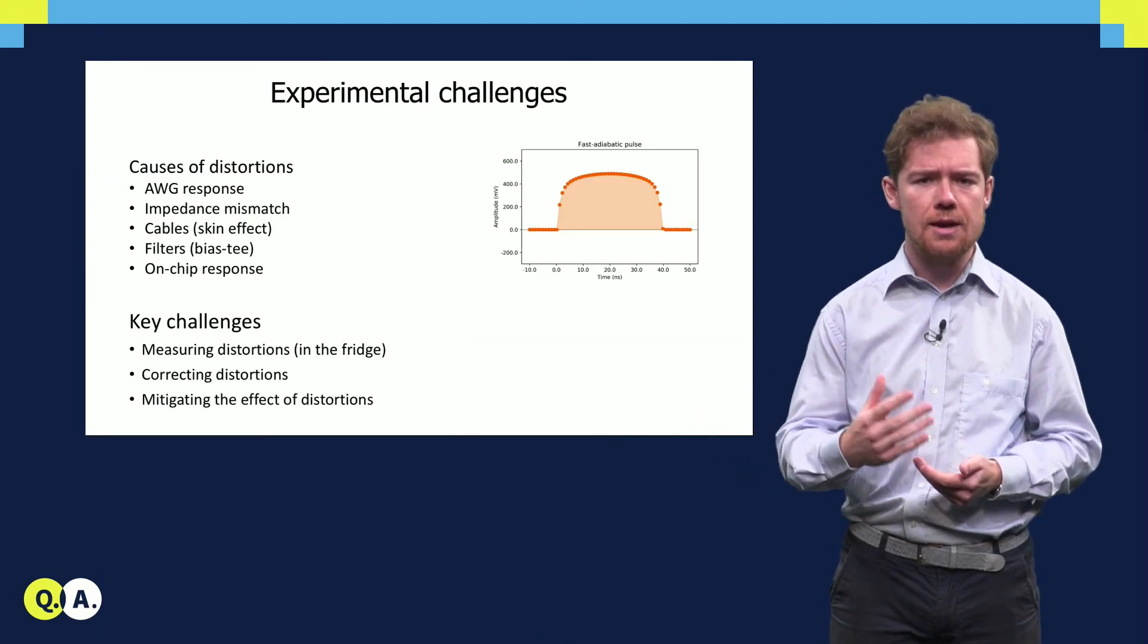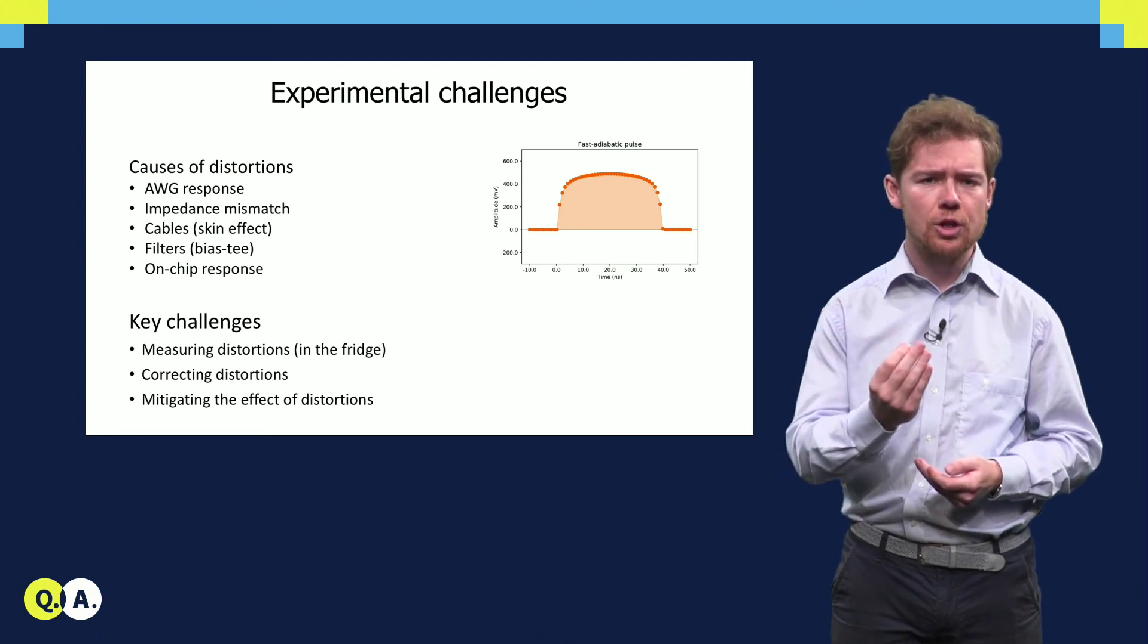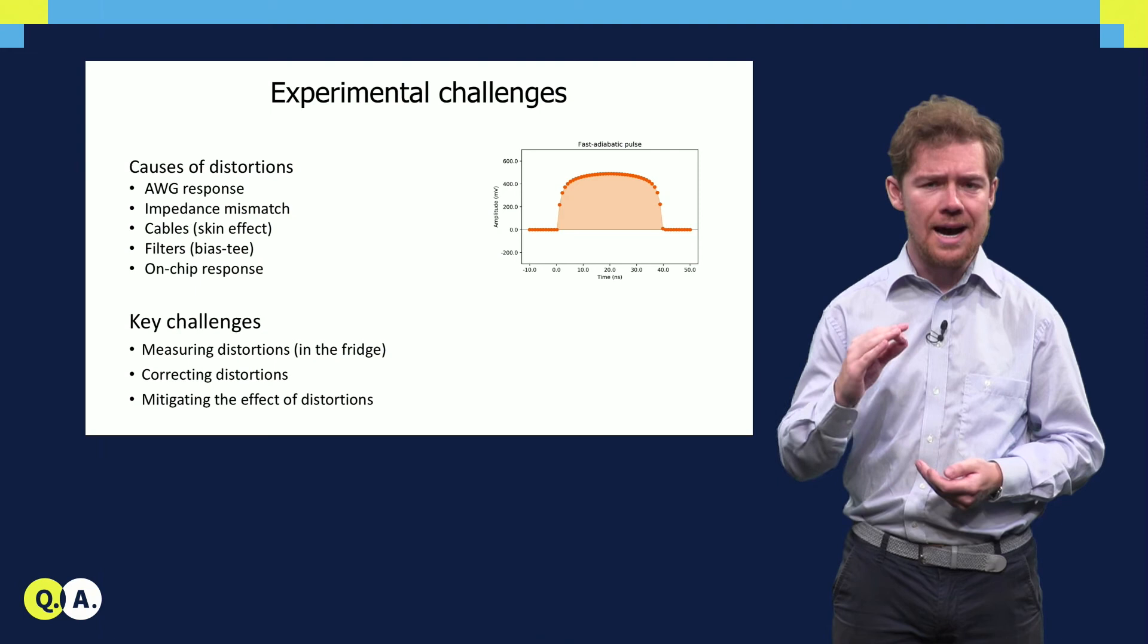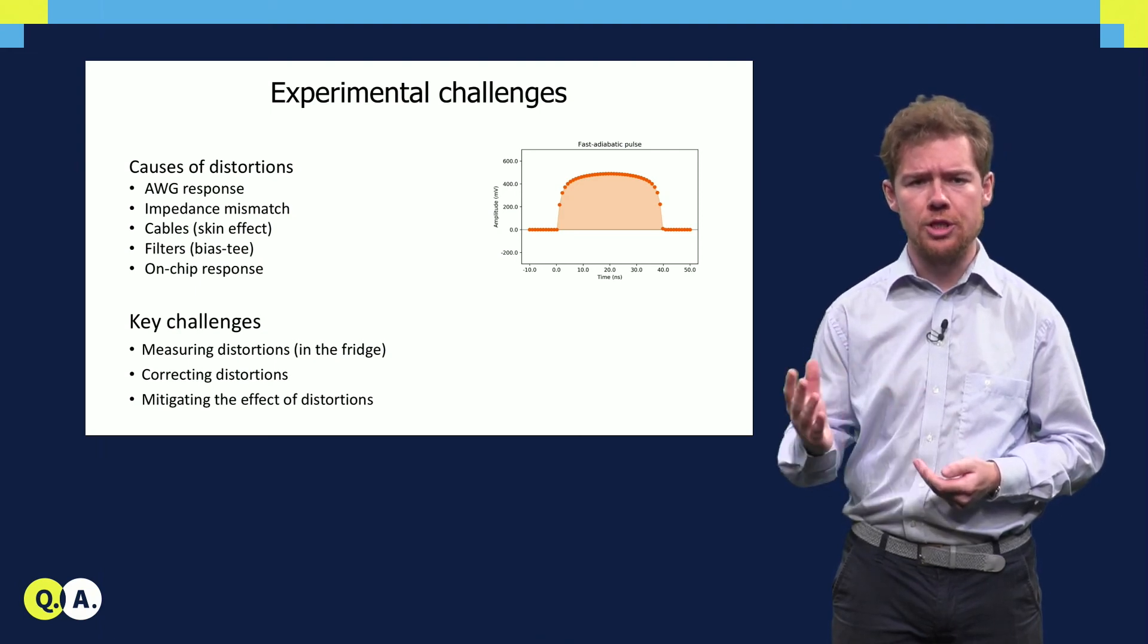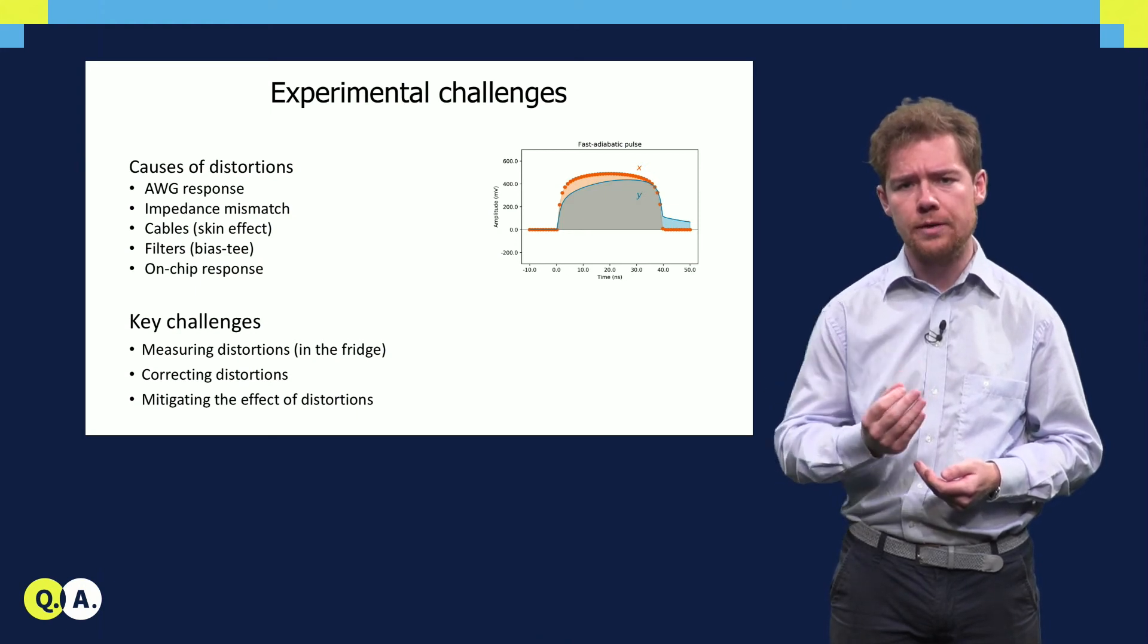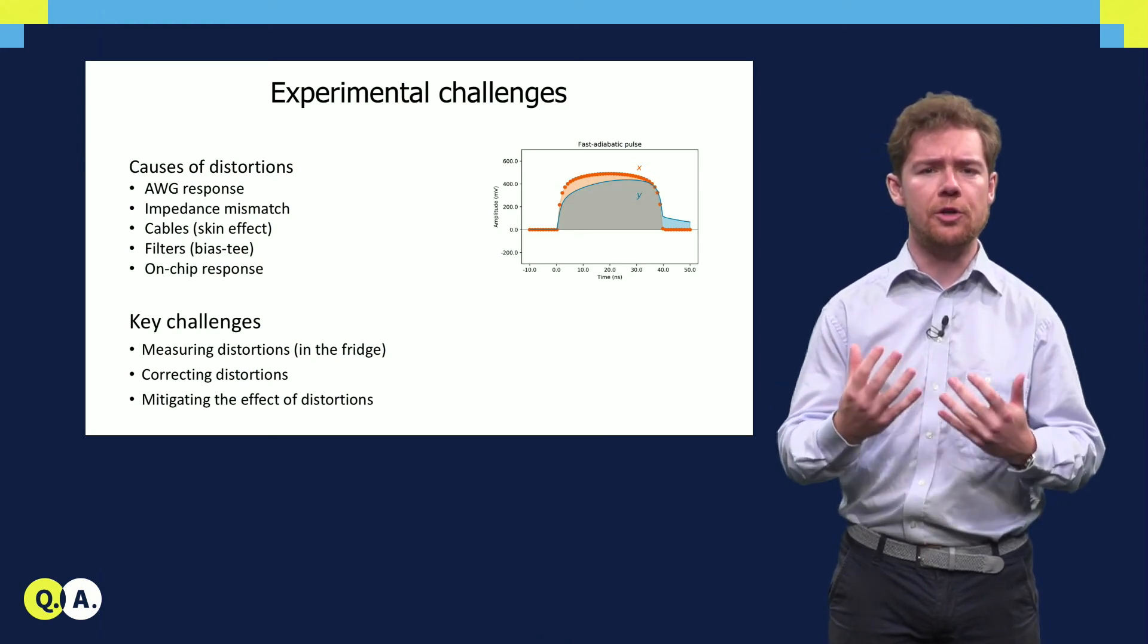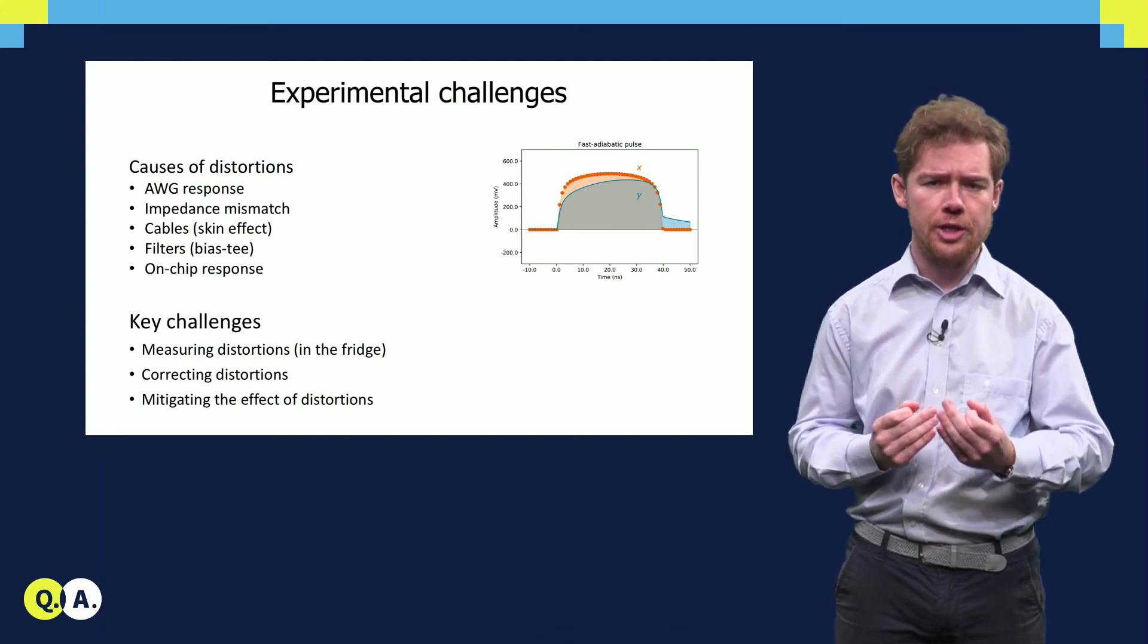Because the conditional phase and the leakage depend on the exact trajectory of the qubit, flux pulsing-based two-qubit gates are highly sensitive to distortions of the pulse shape. Distortions can be caused by electrical components in the signal path between the waveform generator and the qubit, such as filters and cables, but even the on-chip response causes distortions on the signal the qubit experiences.